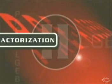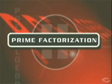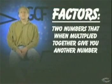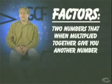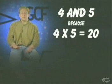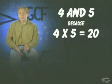Part 2: Prime Factorization. Section A: Factoring. Factors are two numbers that when multiplied together give you another number. Like 2 and 3 are factors of 6 because 2 times 3 equals 6. And 4 and 5 are factors of 20 because when you multiply them together they equal 20. 2 and 10 would also be factors of 20, and so would 1 and 20.